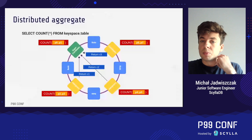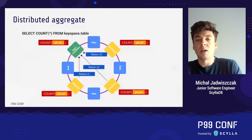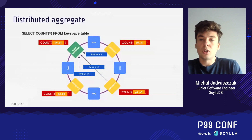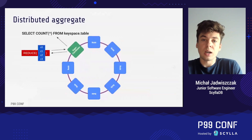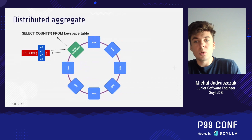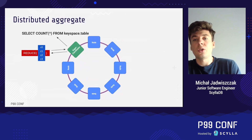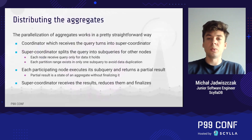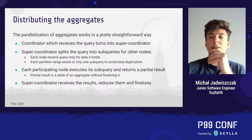The split must be done carefully to avoid overlapping sub-ranges and duplication of data. When a participating node receives the sub-query from the super coordinator, it acts as a coordinator for that query against its own local data. When the aggregation is done, the node returns the partial result to the super coordinator. At the end, the super coordinator, after receiving all partial results, reduces them to the final result, which is then sent to the client.